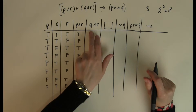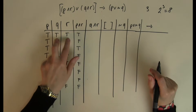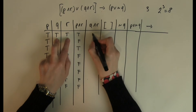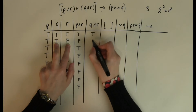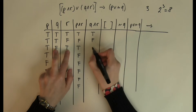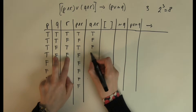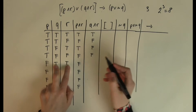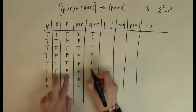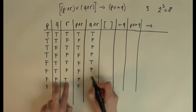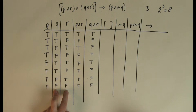Then I am going to calculate Q AND R. Both true gives true. They are different, so that gives false. Both false still gives false because it is the AND. Both true gives true. Then false, false, false for the remaining rows.